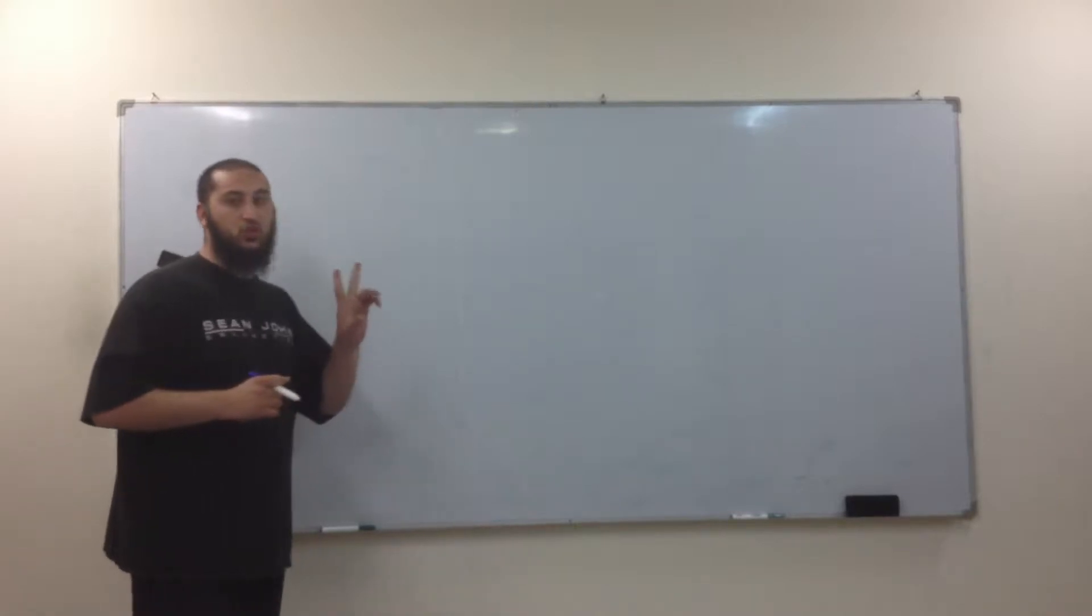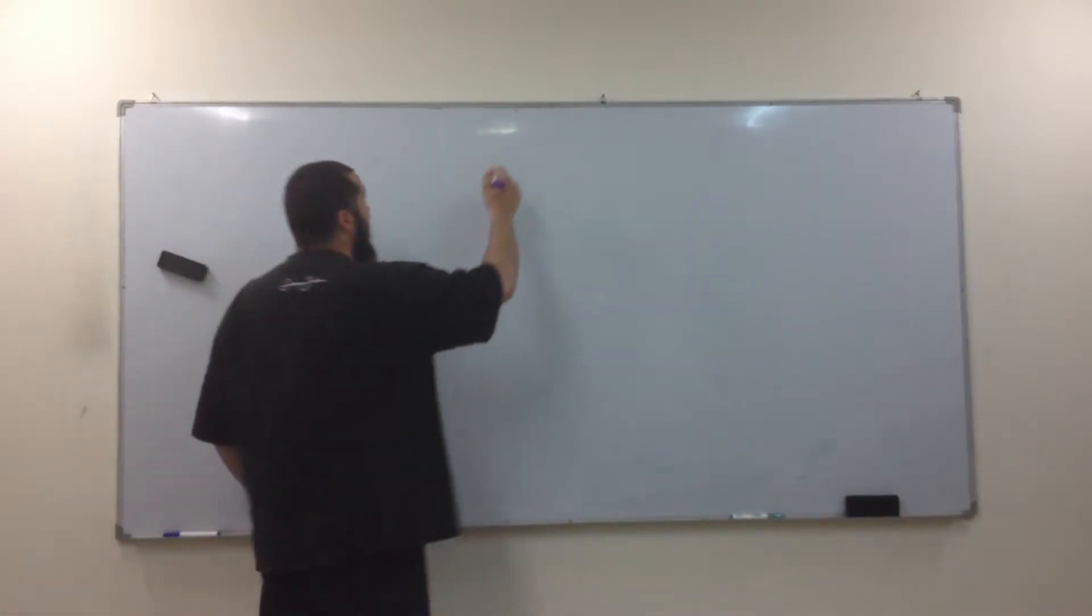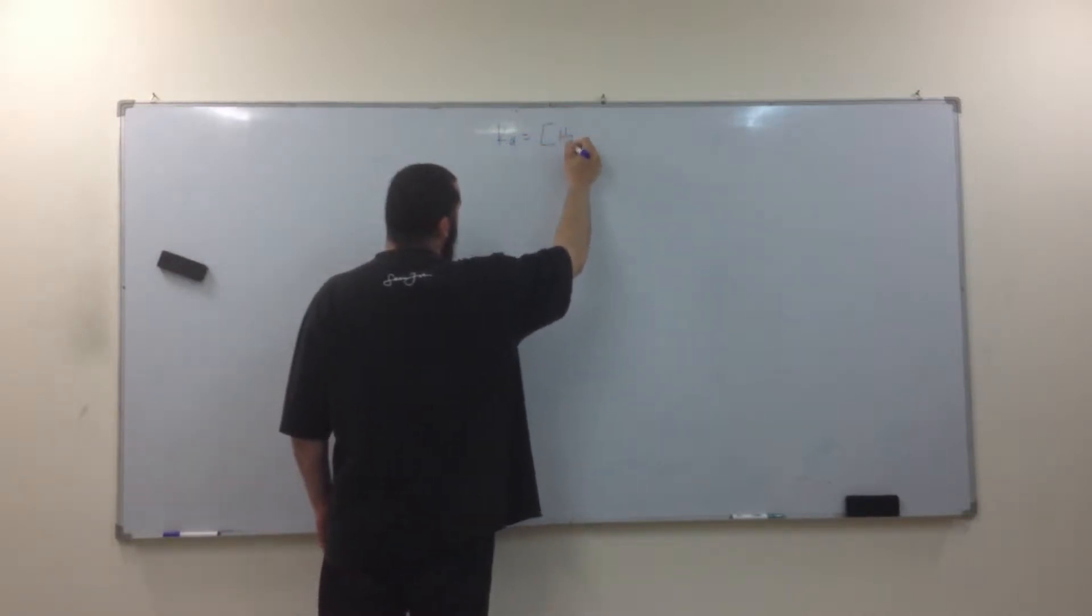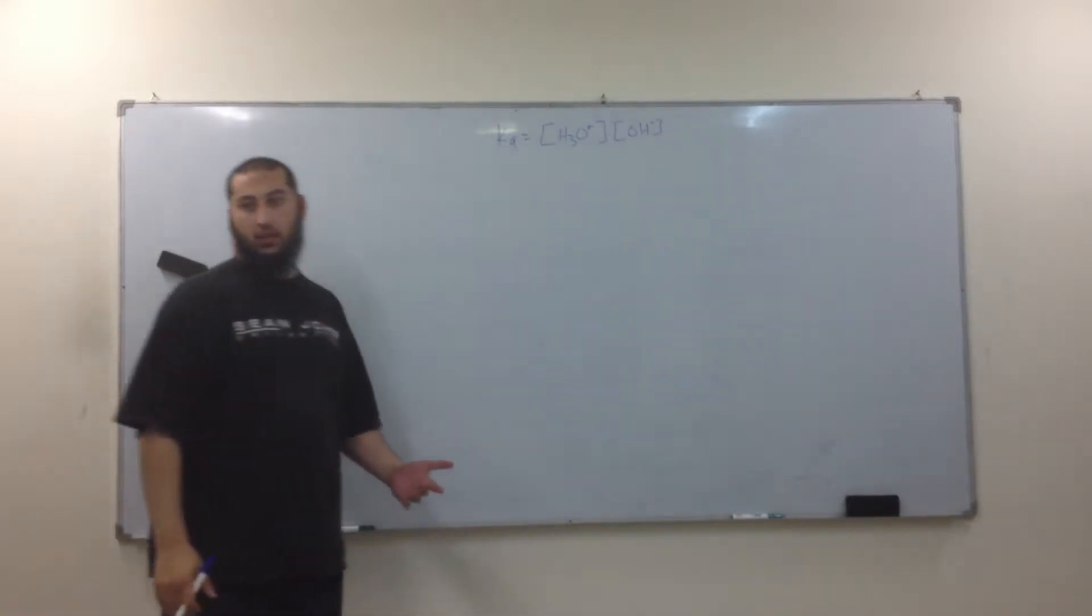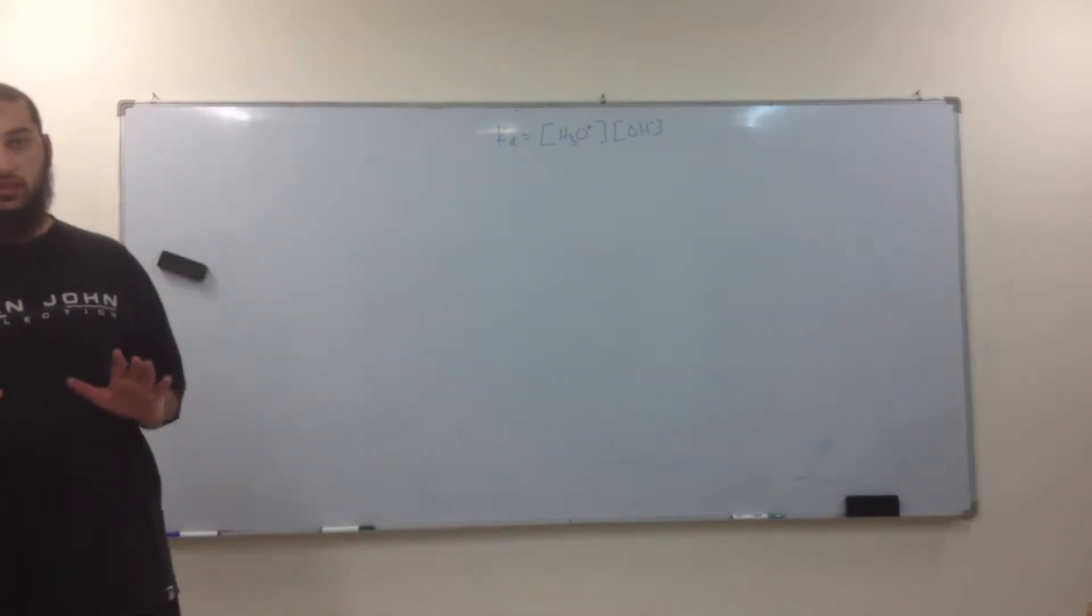So when we're looking at acids, there's two ways you can measure them. One is the Ka. The Ka is the concentration of H3O plus times the concentration of OH minus. What's H3O plus? It's another way to just write H plus, acid.